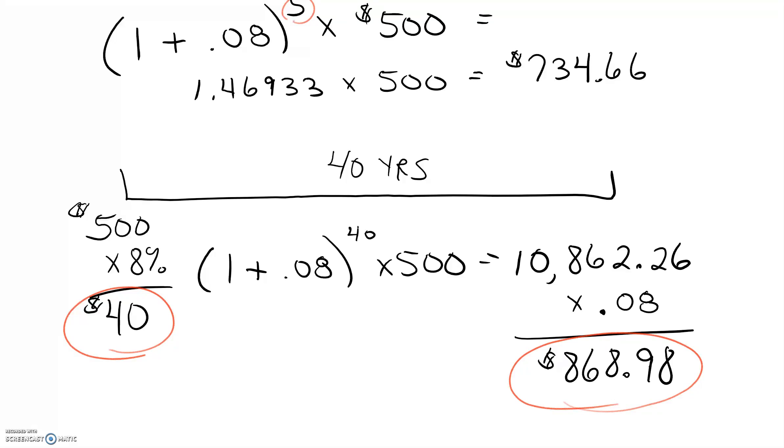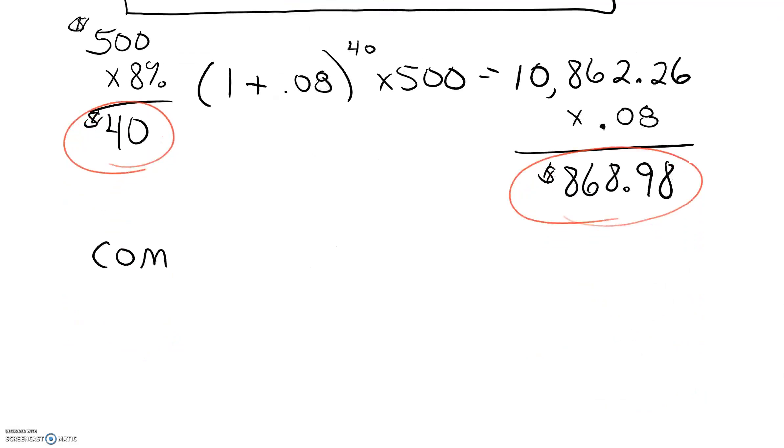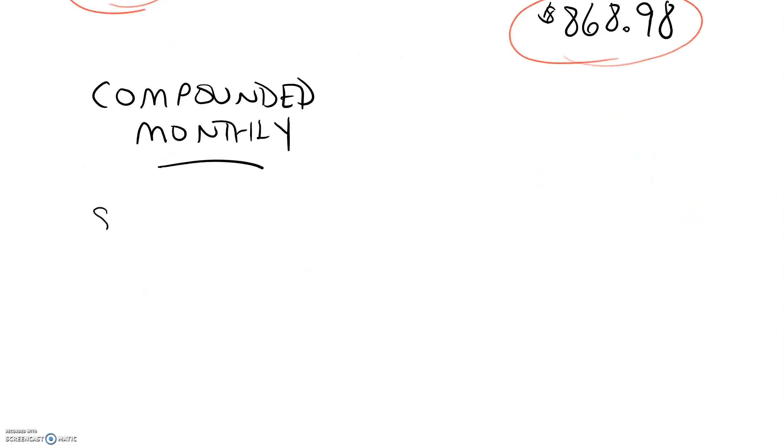But what if the interest that we are earning is compounded more often than annually. What if it were compounded monthly? Now the term compounded as I mentioned before, the term compounded means earning interest on the interest. What happens when it's compounded annually is the interest is earned over the course of a year and then it's put into your account at the end of the year and then you earn interest on it. When it's compounded monthly, what happens is they figure out how much interest you would earn in a month and then they give you that money so that you now start to earn interest on that interest after only a single month instead of having to wait a year. The impact of that, well let's take a look at it.